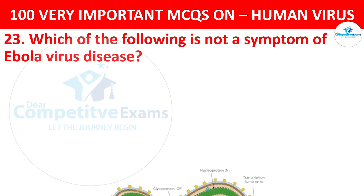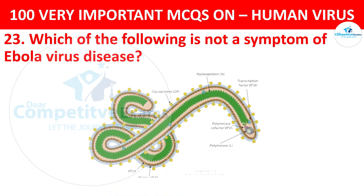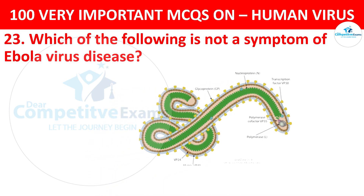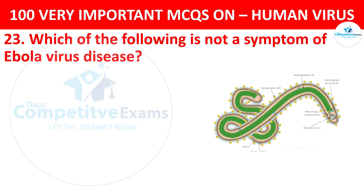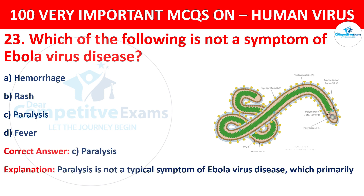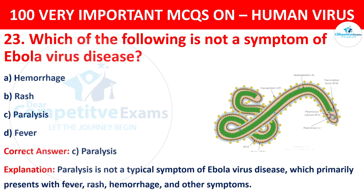Question 23. Which of the following is not a symptom of Ebola virus disease? Your options are hemorrhage, rash, paralysis, or fever. The correct answer is C, that is paralysis. Paralysis is not a typical symptom of Ebola virus disease, which primarily presents with fever, rash, hemorrhage, and other symptoms.